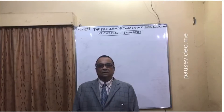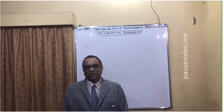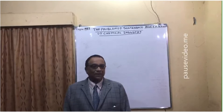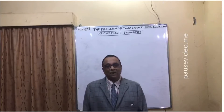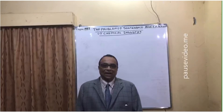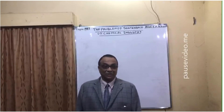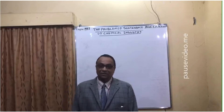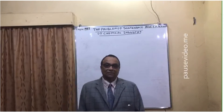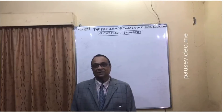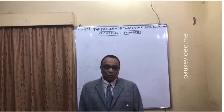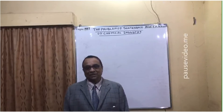Hello everyone, welcome to lecture number 981. Today's topic is the problem of sustenance of chemical industries and with exponential population growth, how to sustain both. On one side there is rapid growth of industries, chemical industries to meet the demand, and at the same time there is global growth of human population.